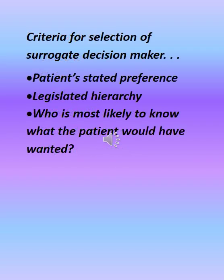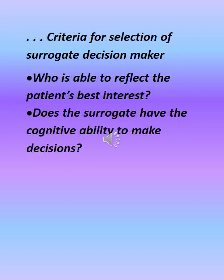Criteria for selection of a surrogate decision maker: the patient's stated preference, legislated hierarchy, who is most likely to know what the patient would have wanted, who is able to reflect the patient's best interest, and whether the surrogate has the cognitive ability to make decisions.